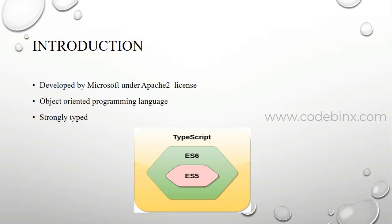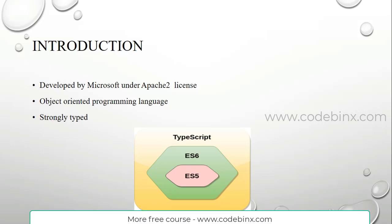TypeScript is an object-oriented programming language and it is strongly typed. Object-oriented programming language means a language that adapts object-oriented programming concepts and uses the features needed for that. The object-oriented programming concepts include class, objects, abstraction, polymorphism, encapsulation, and inheritance. A language that uses these concepts is called object-oriented. TypeScript is an object-oriented programming language.